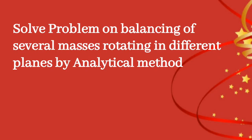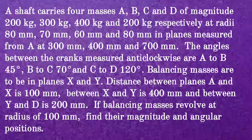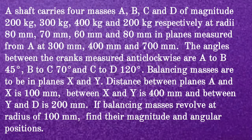Solve a problem on balancing of several masses rotating in different planes by analytical method. A shaft carries four masses A, B, C and D of magnitude 200 kg, 300 kg, 400 kg and 200 kg respectively, revolving at radii 80 mm, 70 mm, 60 mm and 80 mm in planes measured from A at 300 mm, 400 mm and 700 mm. The angles between the cranks measured anti-clockwise are: A to B 45°, B to C 70°, and C to D 120°.